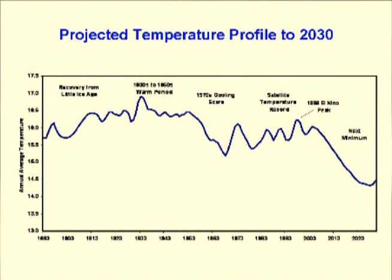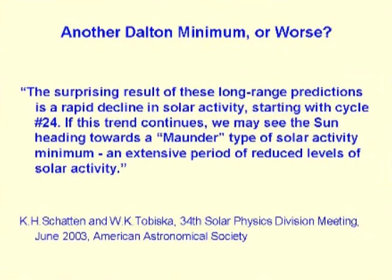Now it can get worse than a repeat of the Dalton minimum. Ken Shatton is the solar physicist with the best track record in predicting solar cycles. His work suggests a return to the advancing glaciers and delayed spring snowmelt of the Little Ice Age for an indeterminate period.